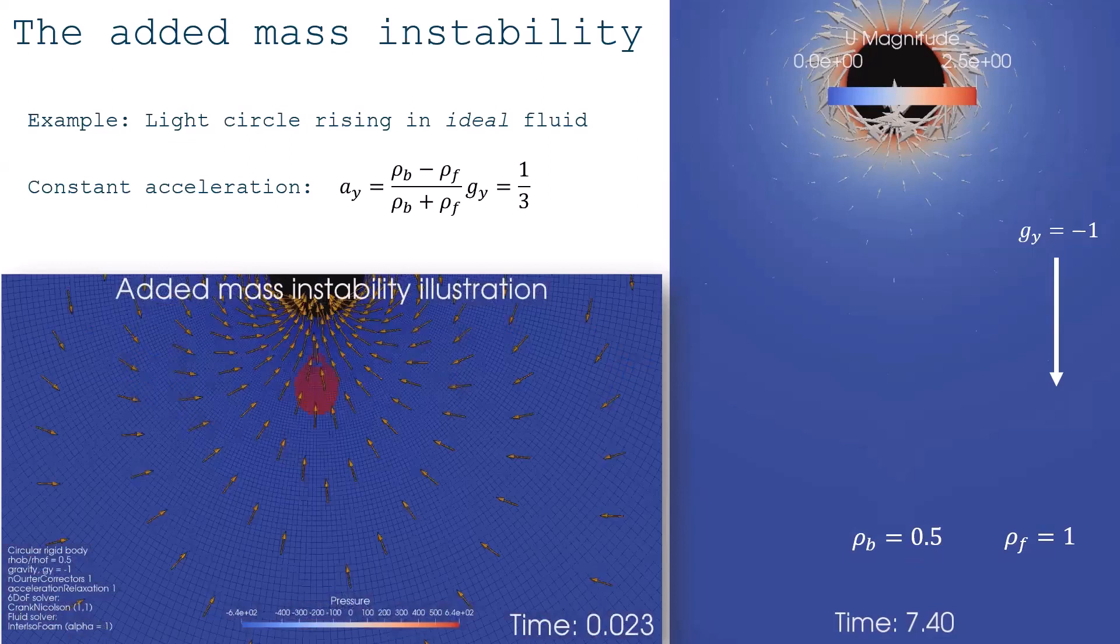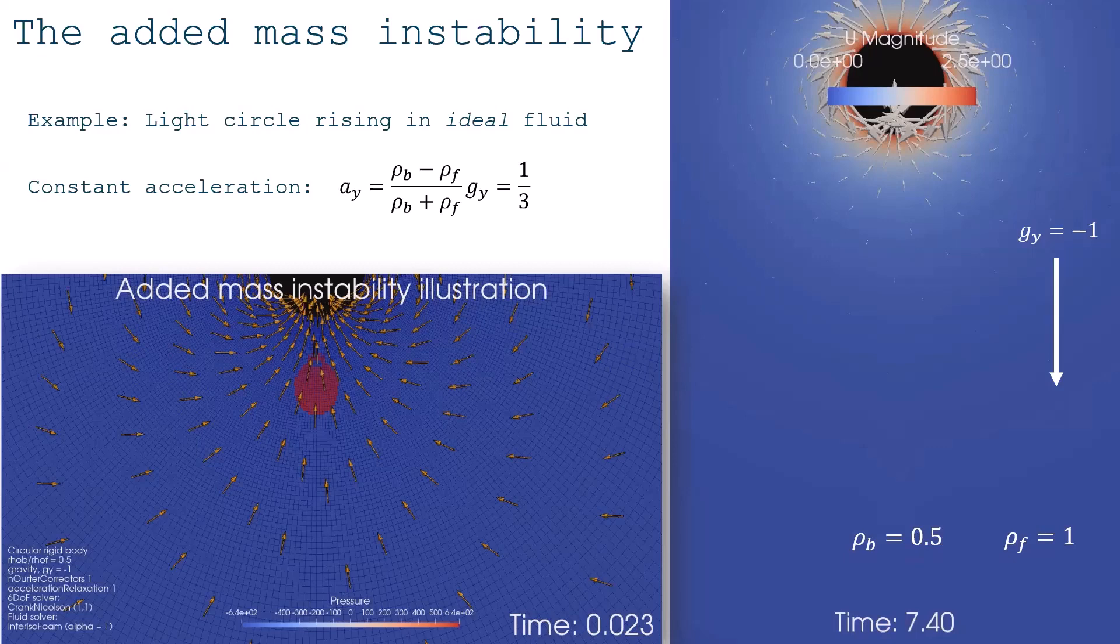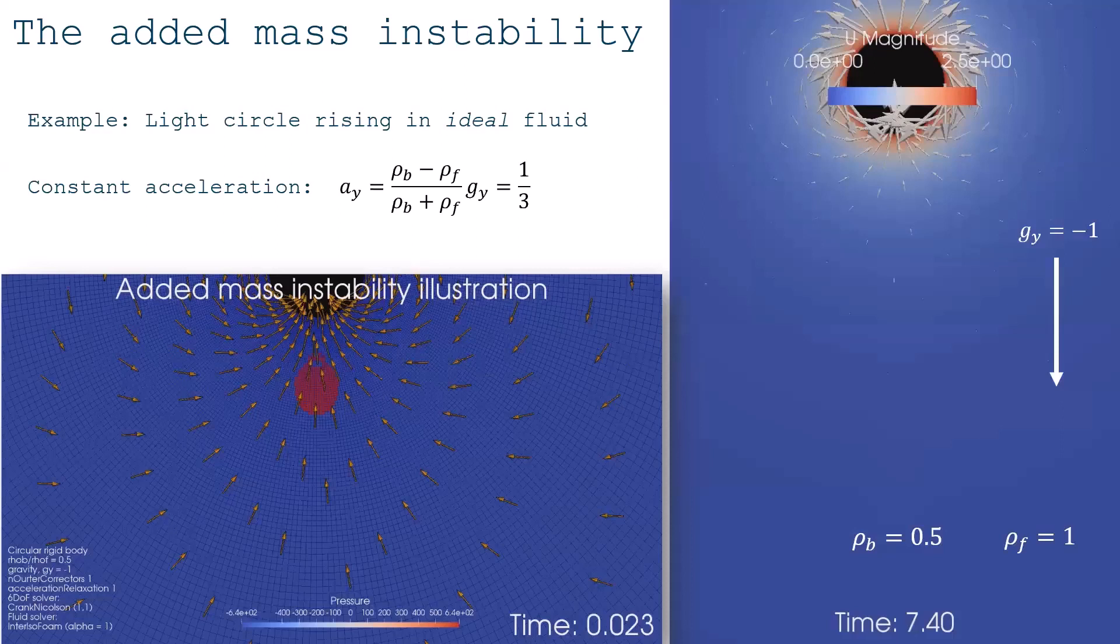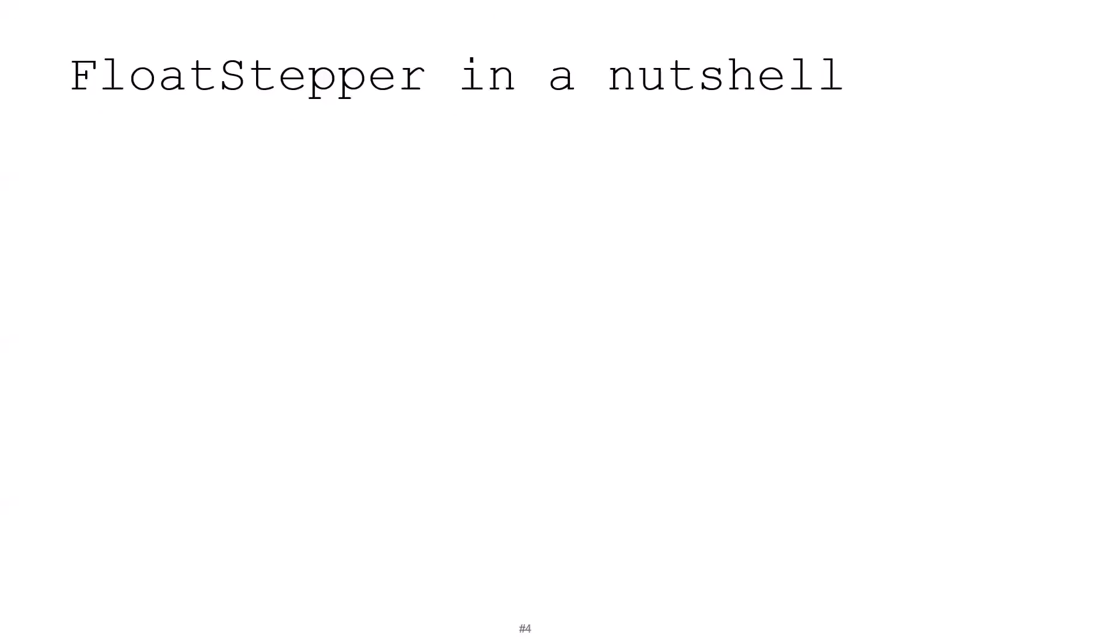So this is an intrinsic problem and there are methods to come around this in OpenFOAM. You can do outer correctors on your PISO loop. You can do acceleration relaxation, but these are sort of duct tape. What we want to do here is try to really solve the problem, completely eradicate the added mass instability. And we looked into the algorithm and seen where exactly does it arise, this problem. And I will tell you that now, and then also show what, in a nutshell, the FloatStepper method that solves this problem is.